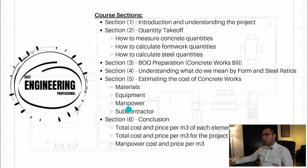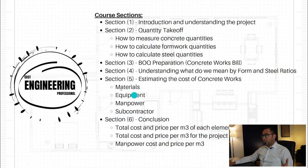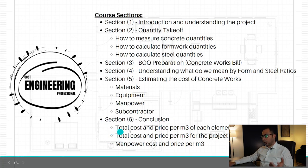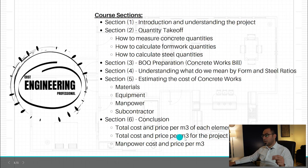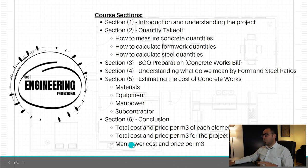Manpower includes carpenters, steel fixers, laborers, and so on, as well as any subcontractors included in this process. After estimating the cost, in section six we will come to a conclusion: the total cost and total price per cubic meter for each element, the total cost and total price per cubic meter for the project as a whole, and also the manpower cost and price per cubic meter.